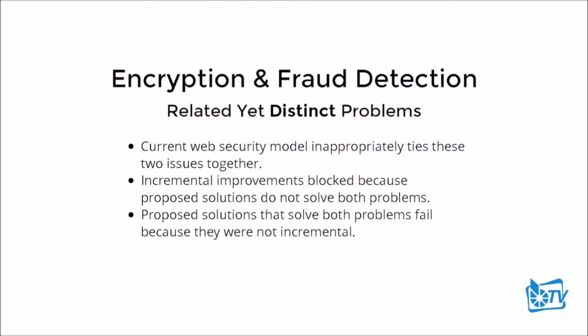The way we're going to get there is to recognize that we have orthogonal problems. We need to separate the need to encrypt from fraud detection and authenticity. I understand that proper encryption still requires authenticity. But if we tackle these problems separately, we can solve both of them. By tying these two issues together, it makes it very hard to get anything done.